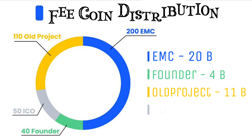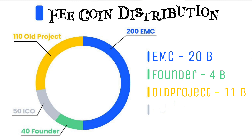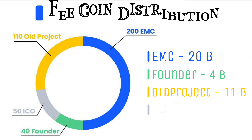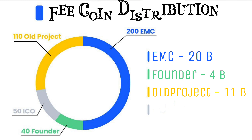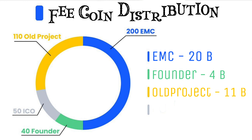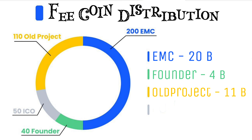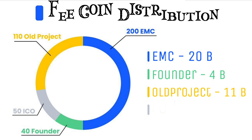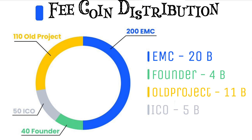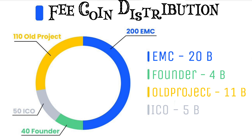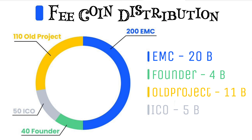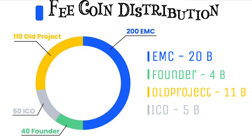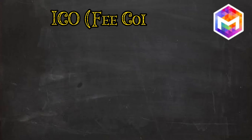11 billion coins will be given to participants of the previous project known as Bloodland. However, these coins will not be given all at once. Tokenizing limits will be applied and they will get their coins as per the rules set by TimeStope. So these 11 billion coins are also not a threat to the value of fee coin. 5 billion coins are reserved for the ICO, kept by TimeStope to provide liquidity to the project, because listing any coin on reputed exchanges is far more expensive than the development cost.